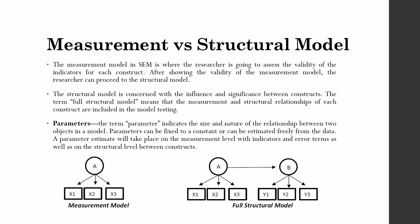The measurement model is used to assess the quality criteria of the constructs — that is, the reliability and validity of the constructs. Once the measurement model is assessed, the next step is to proceed to the structural model, where one assesses the relationship between two or more different constructs in the study.